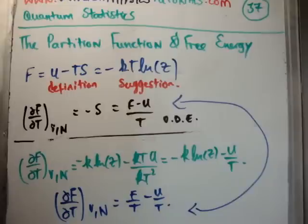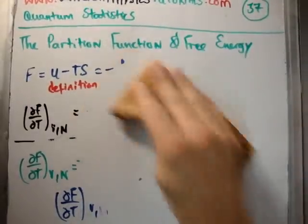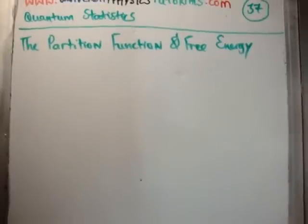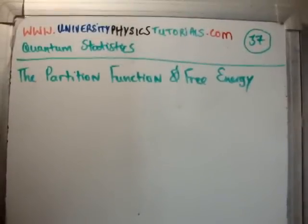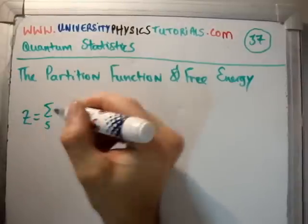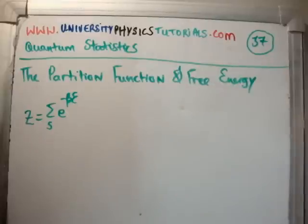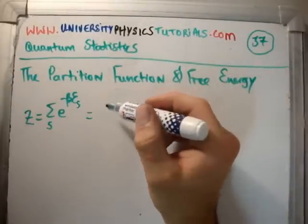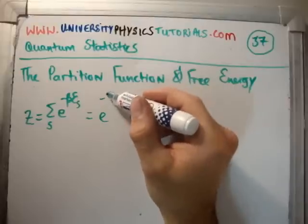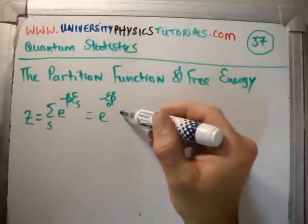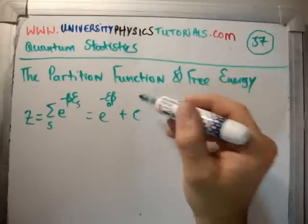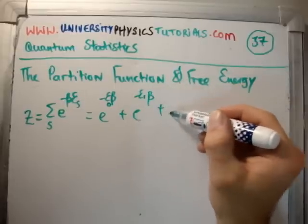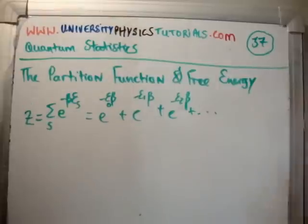So from now on we can say that F equals minus kT log Z. Now, Z is a function of temperature. Z equals the sum over s of e to the minus beta epsilon sub s — that's going to be e to the minus epsilon zero beta, plus e to the minus epsilon one beta, plus e to the minus epsilon two beta, and so on up to infinity.